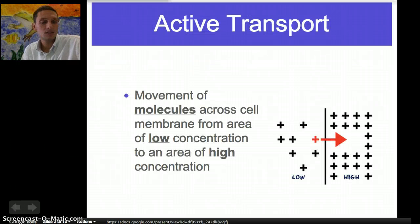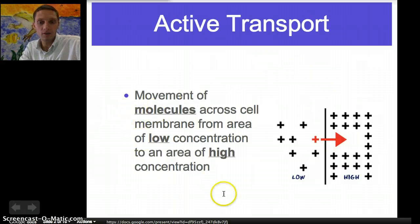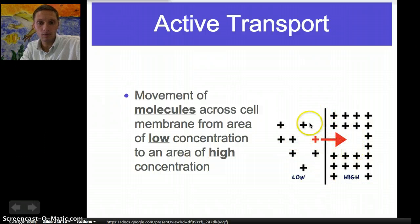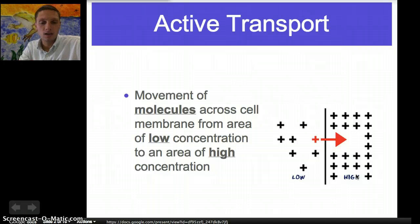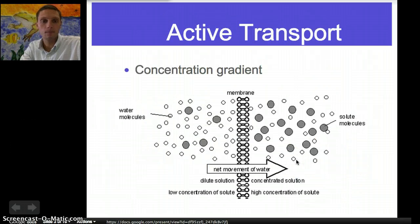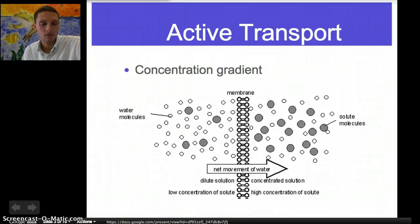Active transport is the movement of molecules across the cell membrane from an area of low concentration to an area of high concentration. This is our membrane here. We're moving molecules from an area of low concentration, where there's very few of them, to an area of high concentration. The opposite of that is passive transport, where we move from an area of high concentration to low concentration. So what we see happening here is we're moving against the concentration gradient.